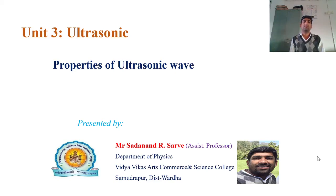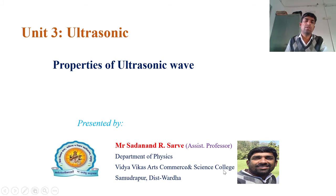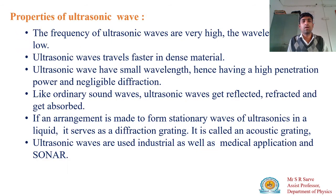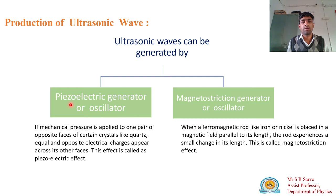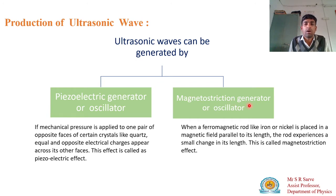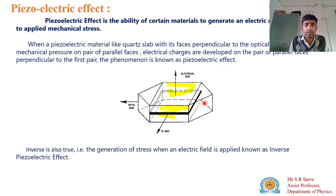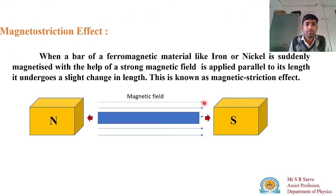Good afternoon students. Today we are going to learn about the magnetostriction effect. In the previous lecture we learned about the properties of ultrasonic waves and how they can be generated. Ultrasonic waves can be generated by two ways: first, the piezoelectric oscillator, and second, the magnetostriction oscillator. We covered up to the piezoelectric oscillator, so now we are going to learn how ultrasonic waves are generated by the magnetostriction oscillator.